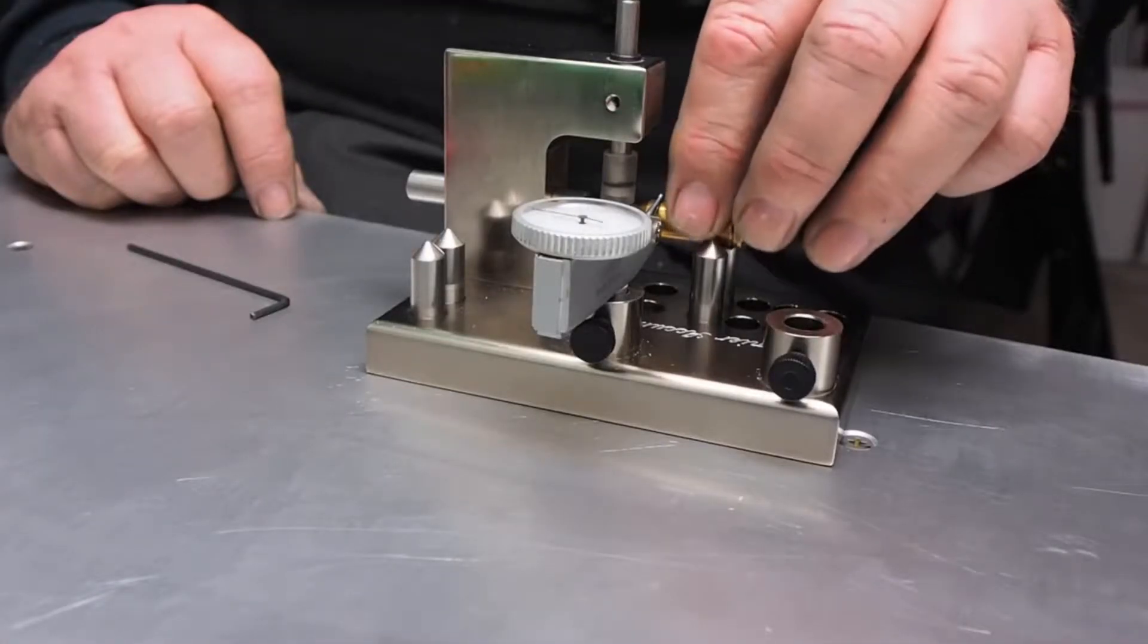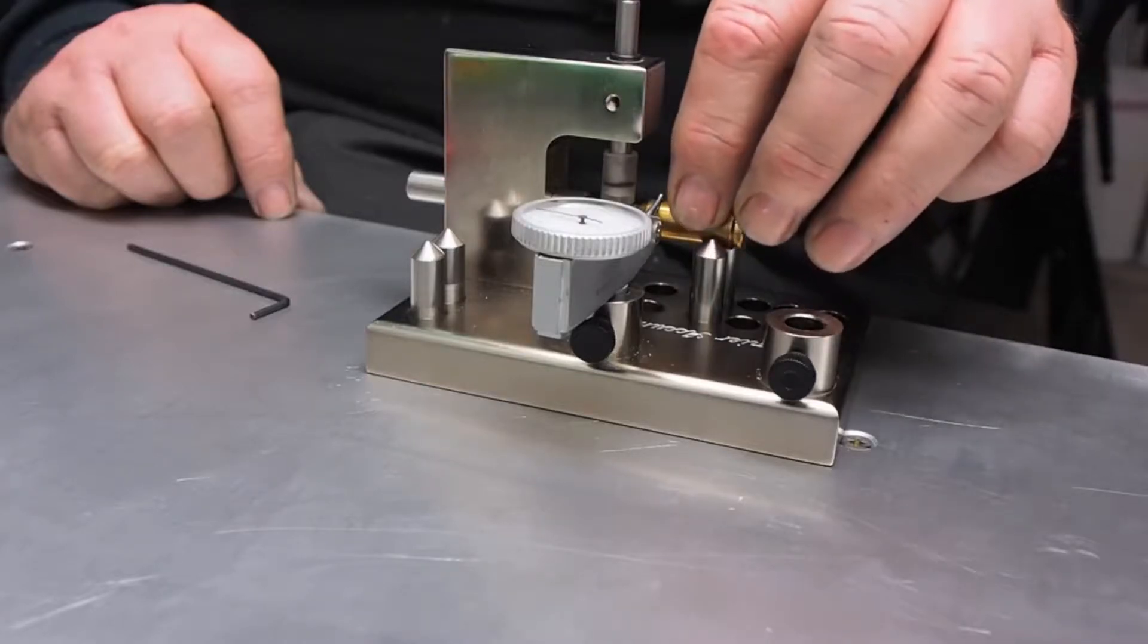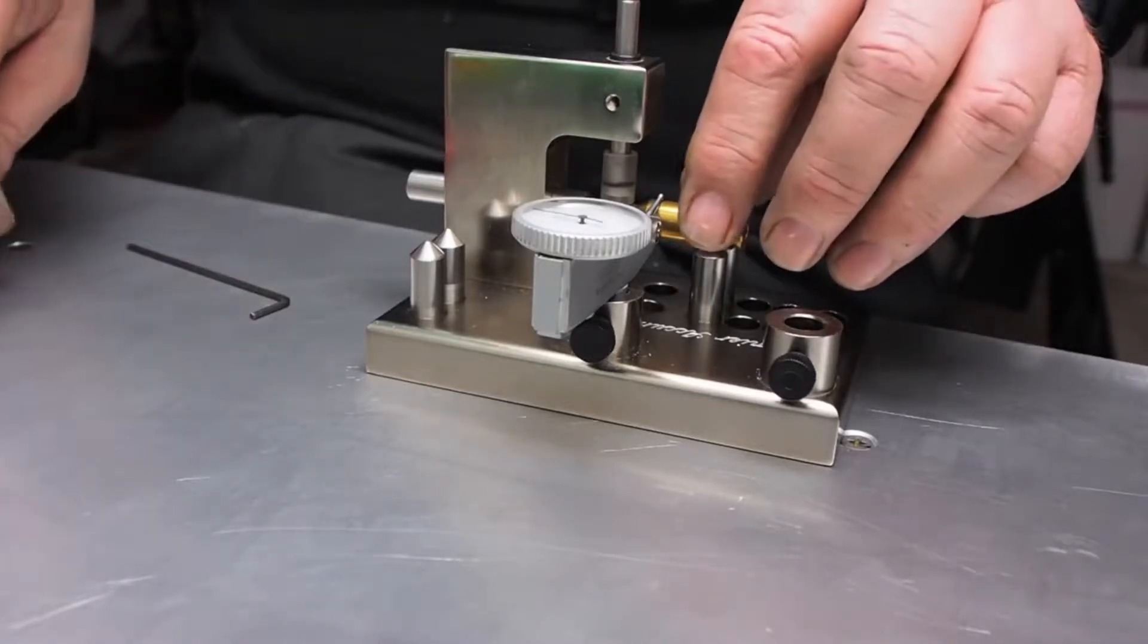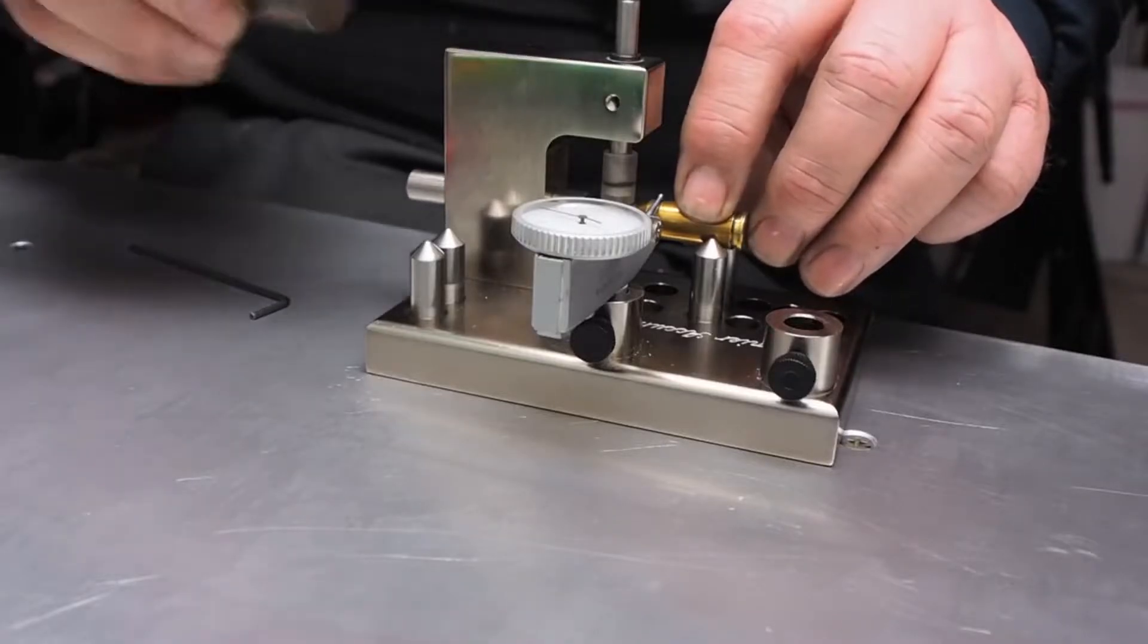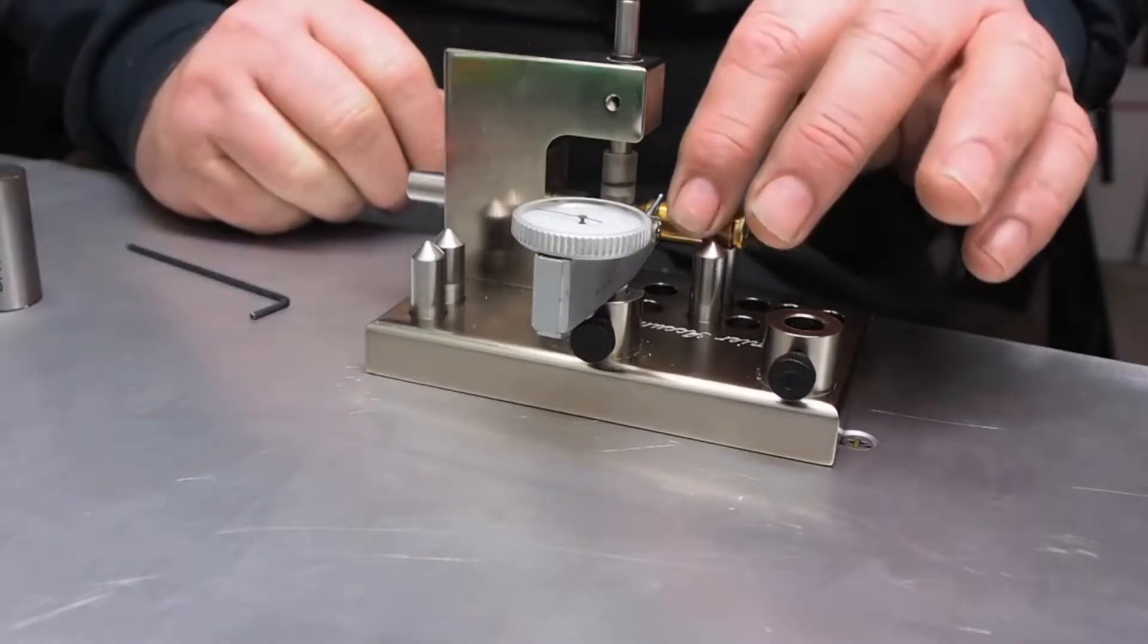If it was out, I'd find the high side, tap it, use this tapper and it'll jar it back into runout. And that's the proper setup.